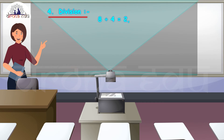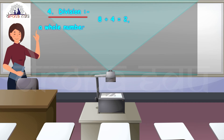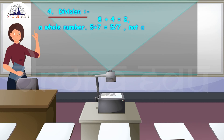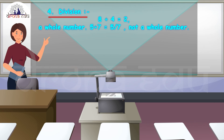Similarly, let us check division. Take the example 8 divided by 4, which gives 2 as the answer — a whole number. Let me consider one more example: 5 divided by 7, which is 5/7. That is not a whole number.